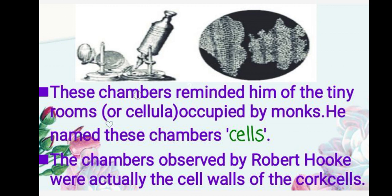These chambers reminded him of the tiny rooms or 'cellula' occupied by monks in a monastery, so he named these chambers as cells. However, the chambers observed by Robert Hooke were actually the cell walls of the cork cells. In this picture you can observe Robert Hooke's microscope. He used two lenses for achieving great magnification, and such microscopes were later known as compound microscopes.